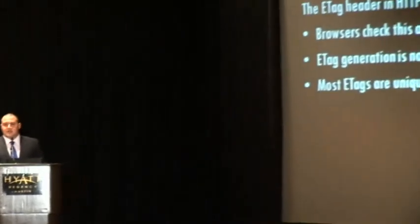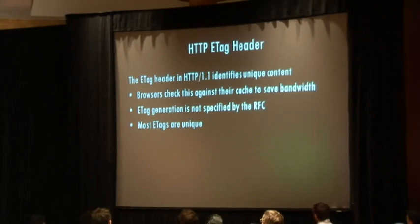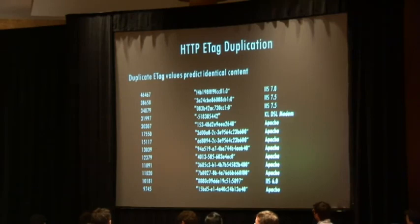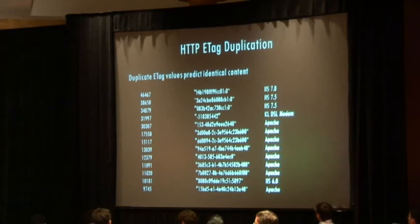ETag headers tell you when a file was last changed for caching purposes. ETags are supposed to be unique for particular content. Looking for duplicate ETags across the internet reveals default configurations of web servers very easily — they all have the same ETag with the same default content. You can find copies of every IIS 7.0 and 7.5 box out there, and differentiate between language packs based just on the ETag of the default content. The same applies to Linux distributions — based on the ETag you can identify Red Hat vs. Ubuntu and even the exact patch level, without even looking at the server header.